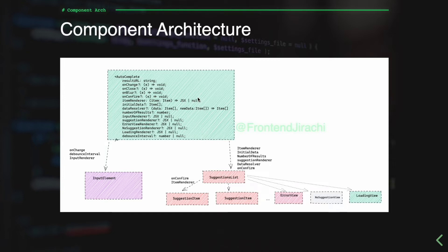The auto-complete component is a parent component that orchestrates everything together. It has two separate children: the input element and the suggestions list. The input element is a controlled component that takes user input. The suggestions list takes in suggestion data and outputs a list of items, with different views for no matching suggestion, an error, or when data is being loaded.